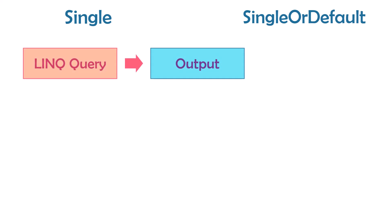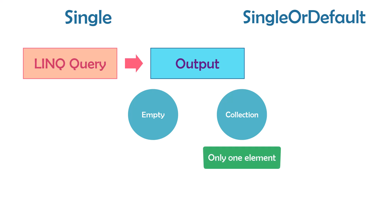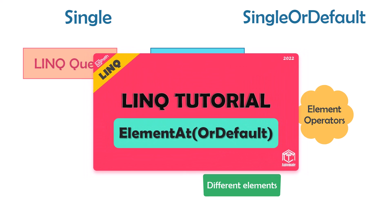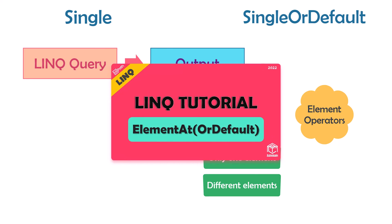In the first video about element operators I mentioned that each LINQ query has an output. This output could be empty or it could be a collection of elements. The collection could contain only one element or more than one element. Sometimes we don't need all elements but only one specific element. To get a specific element we can use element operators, also within the query to filter data and get only one element.